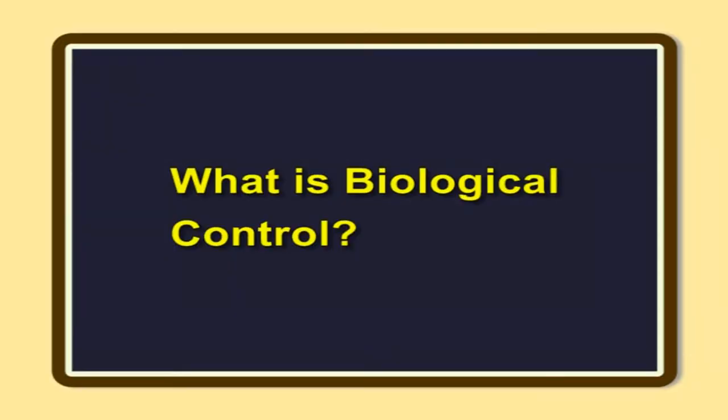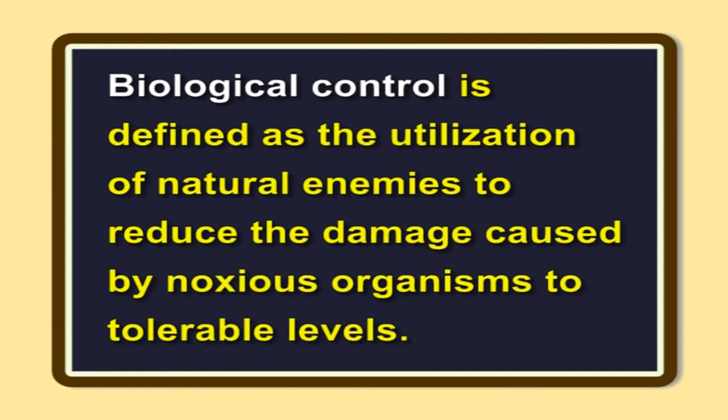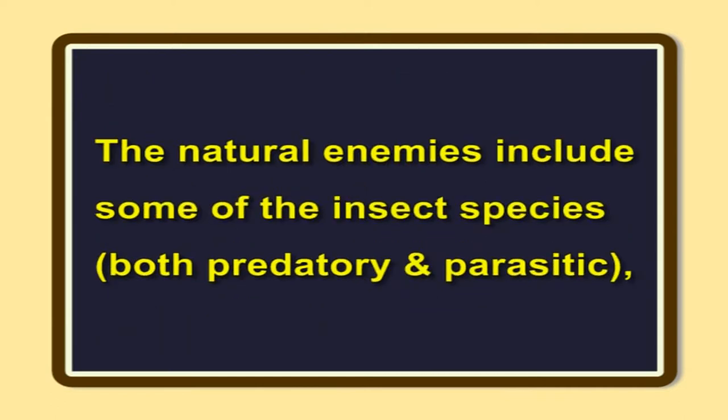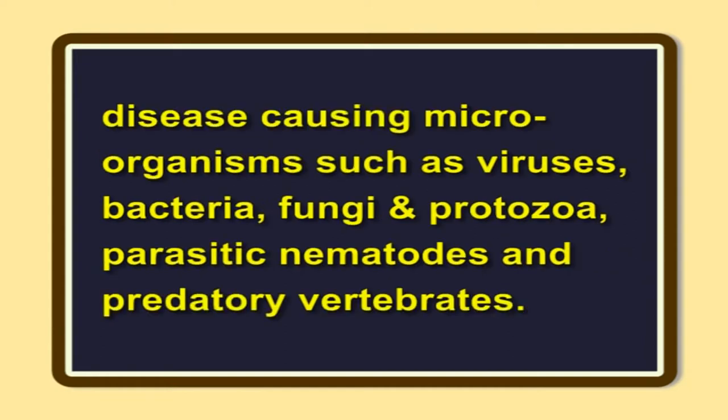What is biological control? Biological control is defined as the utilization of natural enemies to reduce the damage caused by noxious organisms to tolerable levels. The natural enemies include some insect species, both predatory and parasitic, disease-causing microorganisms such as viruses, bacteria, fungi, and protozoa, parasitic nematodes, and predatory vertebrates.